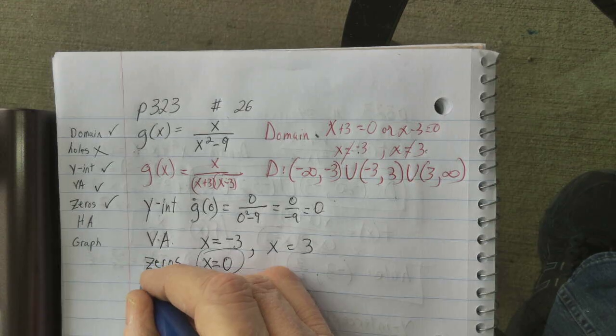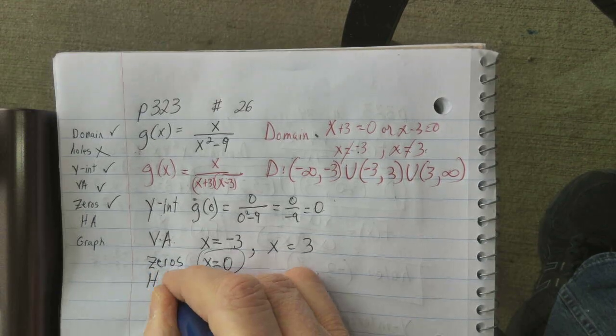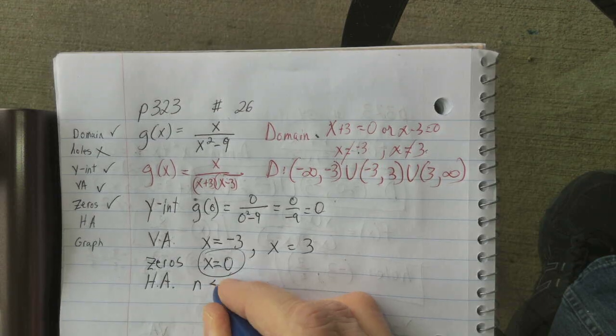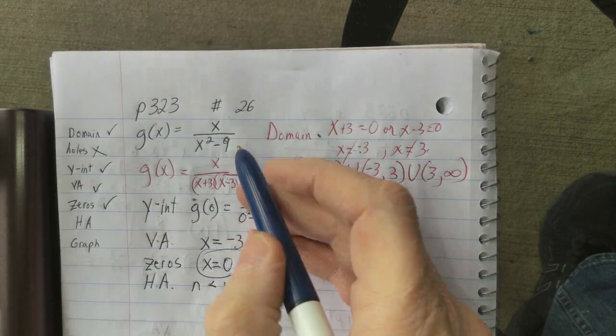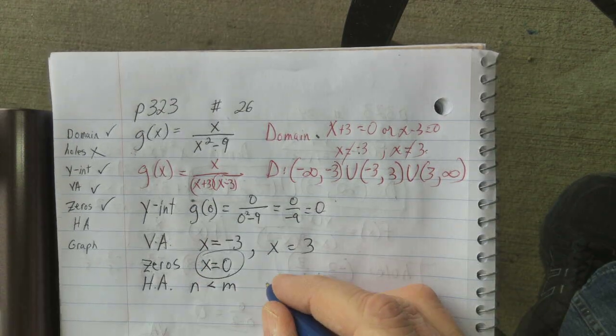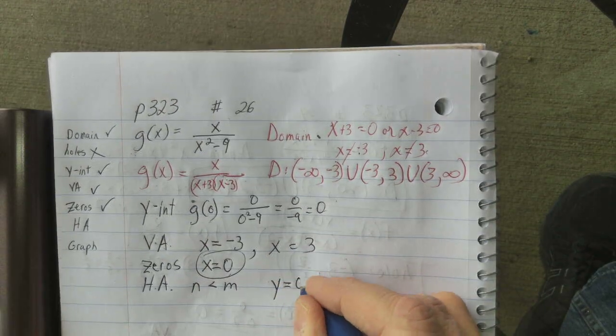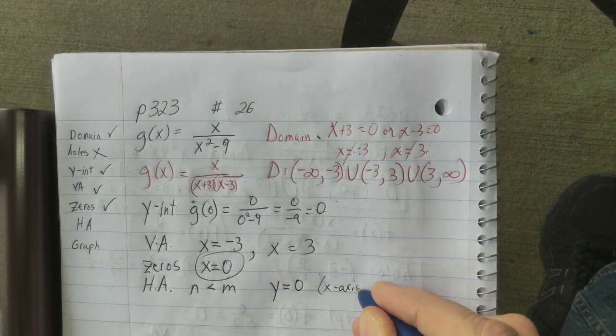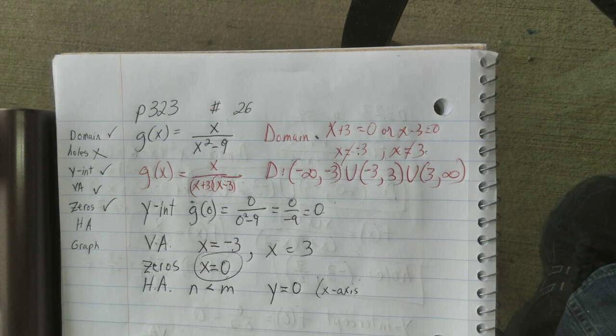Any horizontal asymptotes. This is a case where n is less than m. The degree of the numerator is less than the degree of the denominator. And when that's the case, y equals 0, or the x-axis, is your horizontal asymptote.